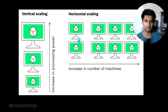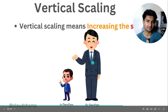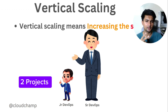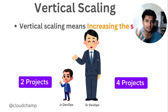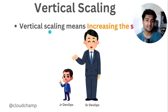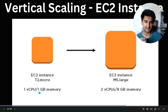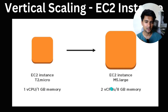I'll explain both types with an example. For vertical scaling, consider a company with two DevOps engineers — a junior who can complete two projects a day and a senior who can complete four. If you have more workload, you replace the junior with the senior. Vertical scaling means increasing the size. In AWS terms, if you're using a T2 micro with one vCPU and 1 GB RAM, you can increase it to an M5 large with two vCPUs and 8 GB RAM.